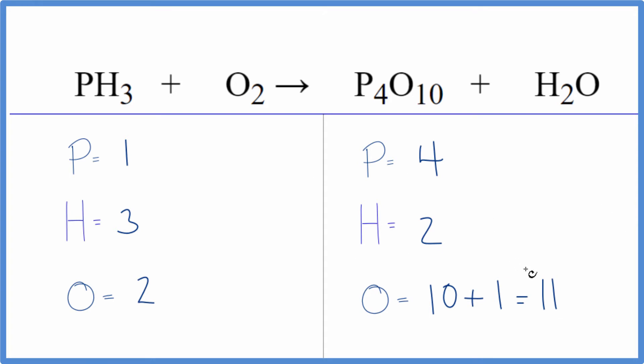Let's leave the oxygens to last and balance the phosphorus atoms first. We could put a 4 in front of the PH3. 1 times 4 would give us four phosphorus atoms—they would be balanced.